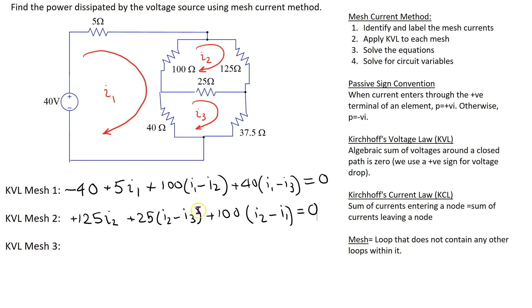Let's continue the process for mesh 3. Again we have three resistors. Let's start with this resistor. So through this resistor the current is only I3, so we get 37.5 I3. And then through the 40 ohm resistor there are two currents and now we give precedence to I3.